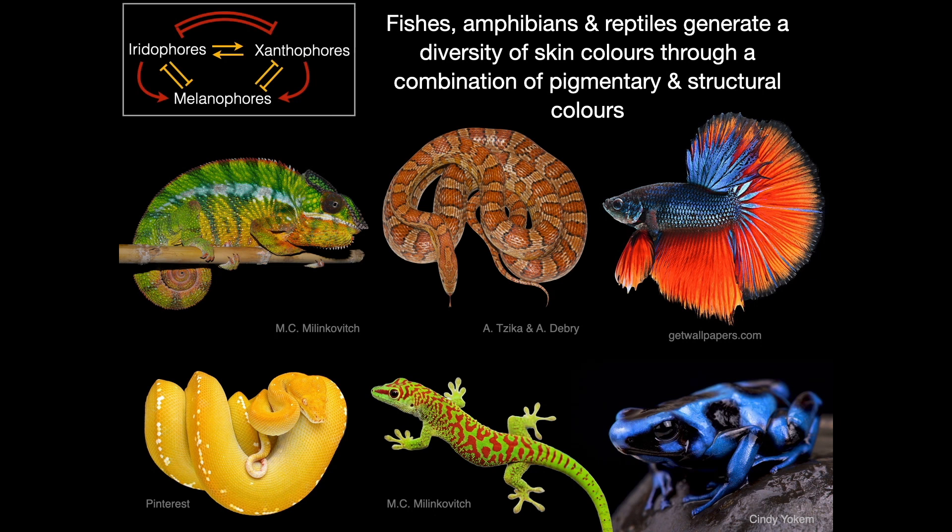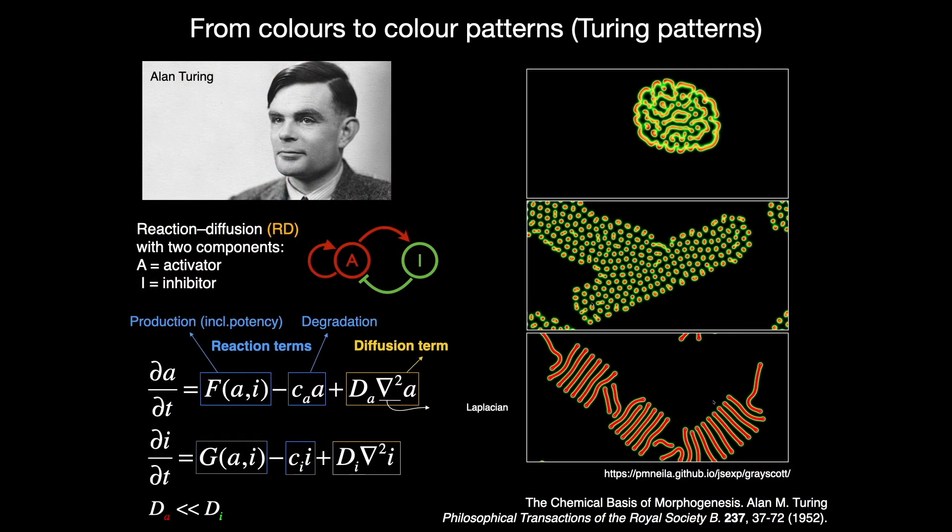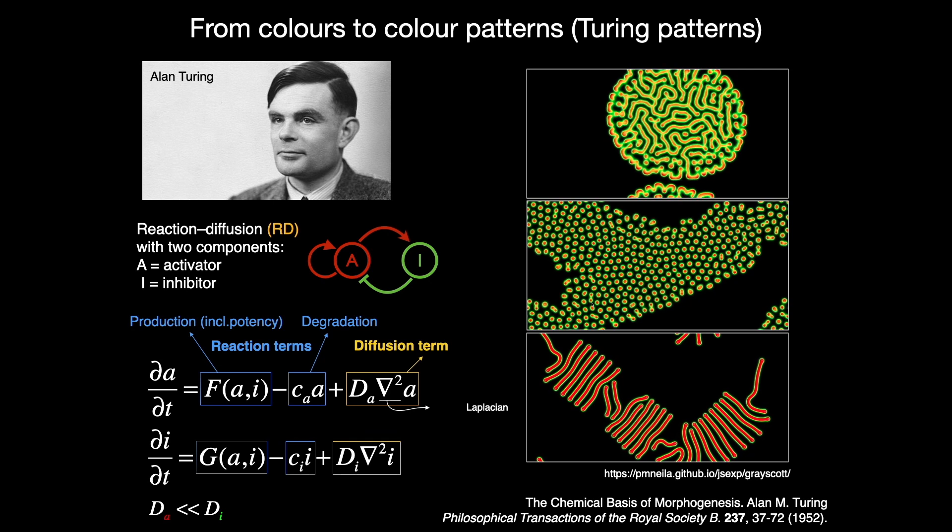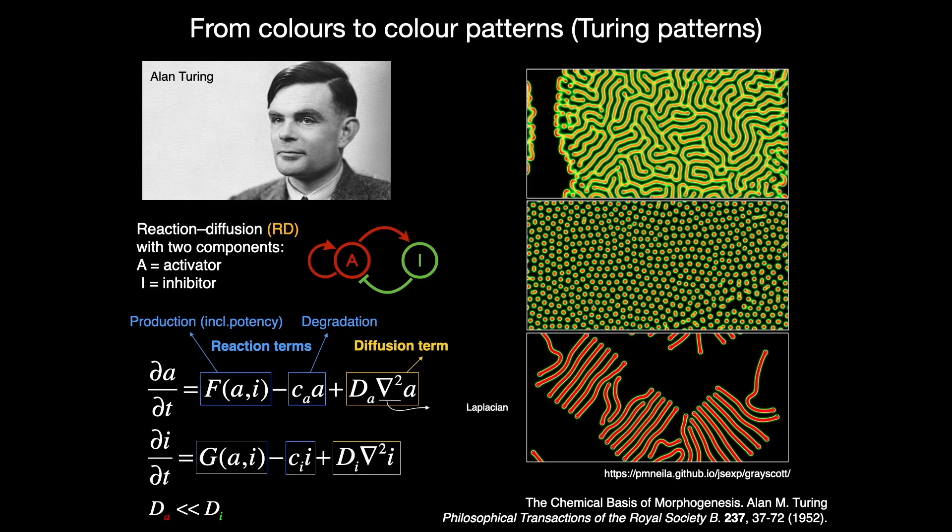Skin color patterns in fishes, amphibians and reptiles are self-organized through interactions among three types of chromatophore cells. This patterning process is efficiently described with Reaction Diffusion, or RD for short, a model developed in 1952 by Alan Turing.